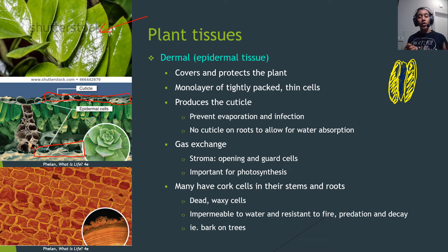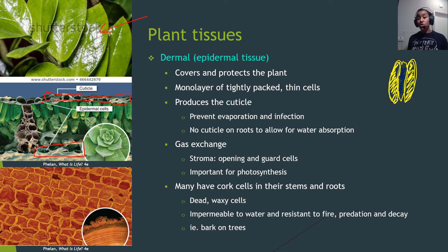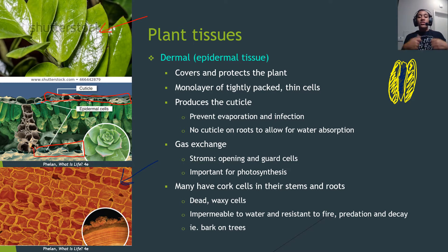Many plants also have cork cells on their stems and roots. These are dead cells that are waxy and far more dense — a good example is tree bark, which is very thick, hard, and dense. Cork cells protect the plant from predation, disease, fire, and also prevent water loss. They're more present on stems and roots than on leaves.